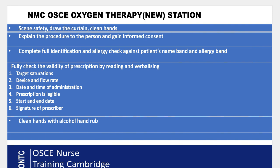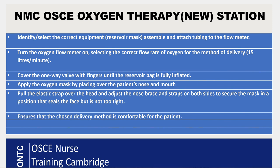Once you have confirmed the prescription is complete and valid, clean your hands with alcohol hand gel. Then identify and select the reservoir mask from the collection of masks provided — the reservoir mask comes with tubing already attached. Attach the other end of the tubing to the oxygen flow meter, whether it is on the wall or a cylinder. Turn the flow meter on and set the correct rate of 15 litres for high flow oxygen delivery.